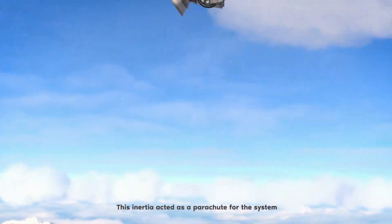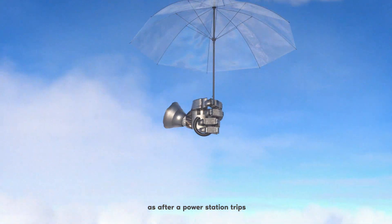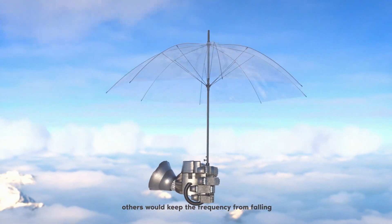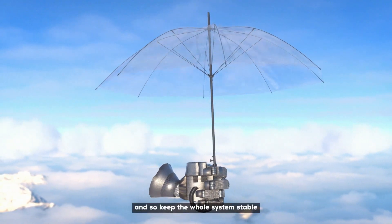This inertia acted as a parachute for the system, as after a power station trips, others would keep the frequency from falling and so keep the whole system stable.